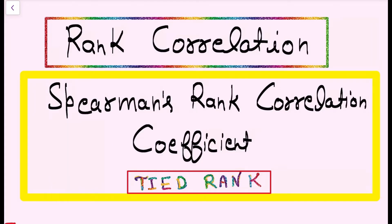We discussed two cases. The first case was when ranks are given. The second case was when ranks are not given but a tie in rank occurs — this is called a tied rank. In this video, we will explain what tied rank is, what formula is used, and find the rank coefficient of correlation with an example.